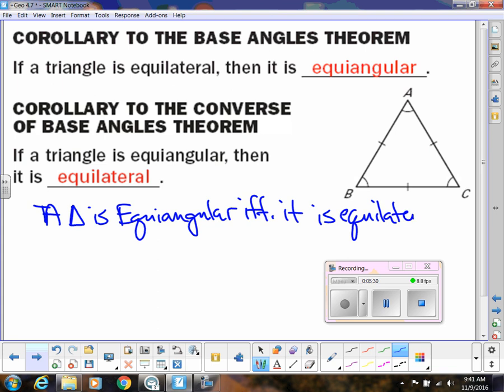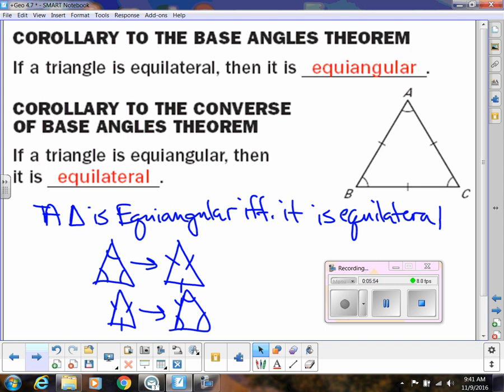And that's because both of these are true. So symbolically, you can do this, right? That means equiangular implies equilateral and then vice versa. So that's another way symbolically we can represent that.